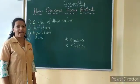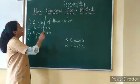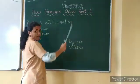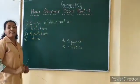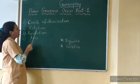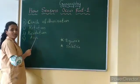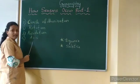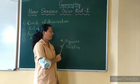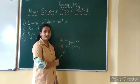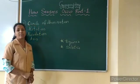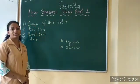Hello everyone. As we have started with lesson number 1, 'How Seasons Occur,' part 1, we have already discussed about the circle of illumination, rotation of the earth, revolution of the earth, and axis of the earth. Today, we are going to discuss about equinox and solstice. Before moving further, let's revise the concept of important latitudes.